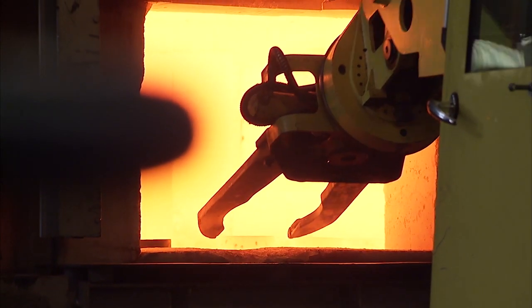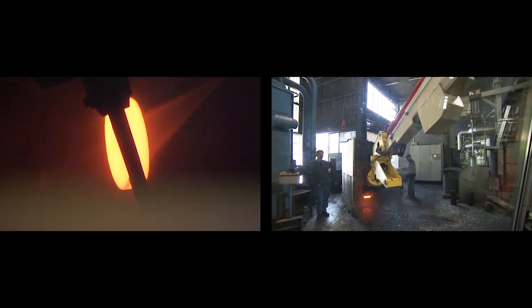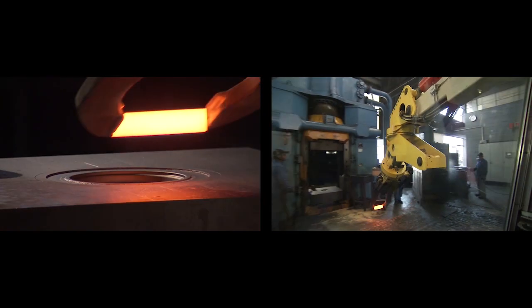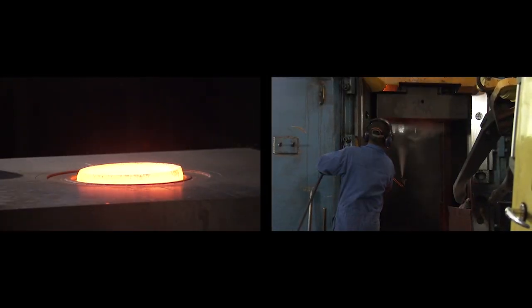Die forging is the ideal technology for batch sizes from approximately 100 pieces. Shaping takes place in a cavity called a die. This technique enables the production of a wide variety of shapes.